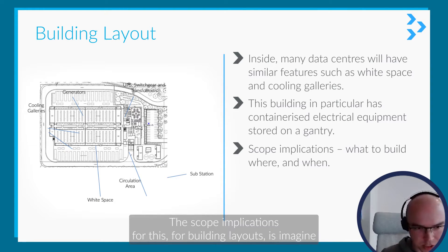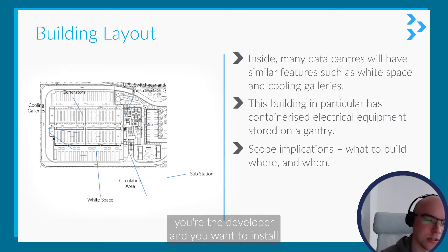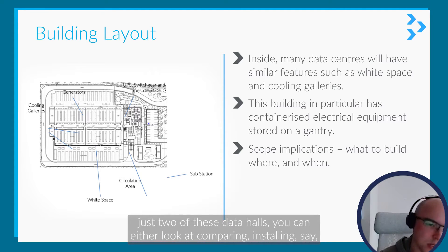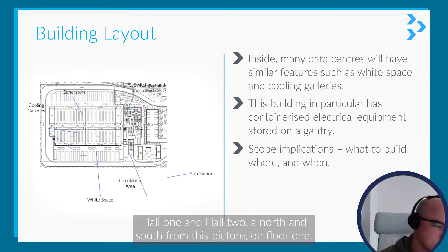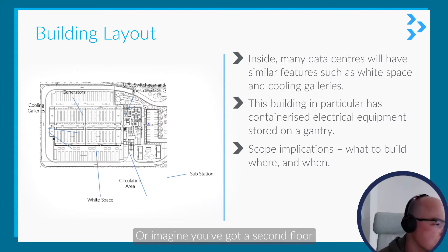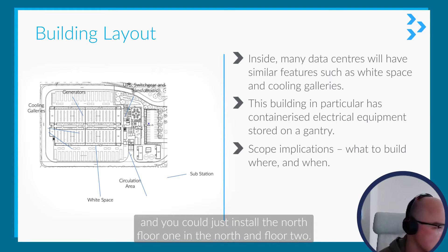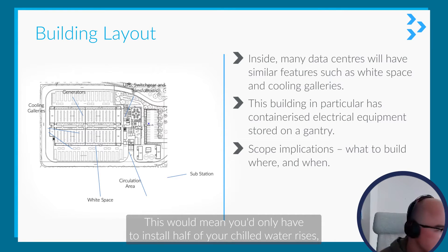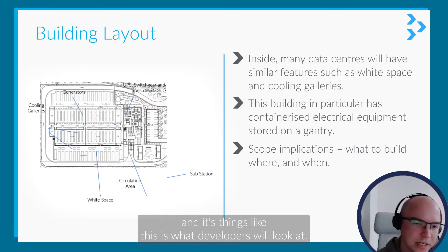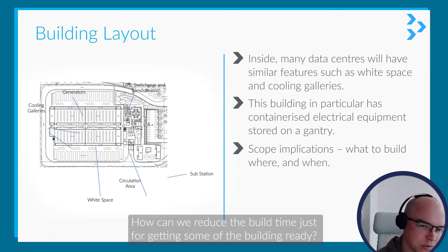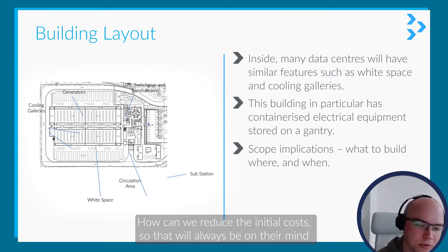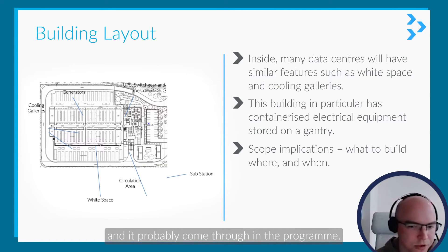The scope implications for building layouts: imagine you're the developer and you want to install just two data halls. You'd compare installing hall one and hall two — north and south — on floor one, versus installing the north hall on floor one and the north hall on floor two. The latter means you'd only need to install half your chilled water risers. Developers are always looking at how to reduce build time and initial cost, and this will come through in the program.